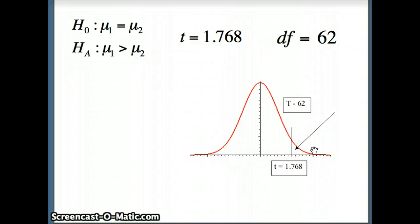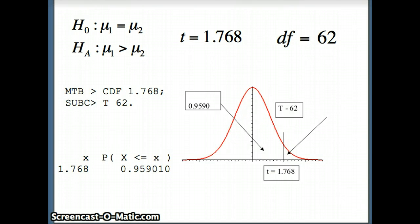I will ask Minitab CDF, 1.768, t with 62 degrees of freedom. And what does Minitab give us? It gives us 0.959, which means this area is almost 96% of the area under the curve.